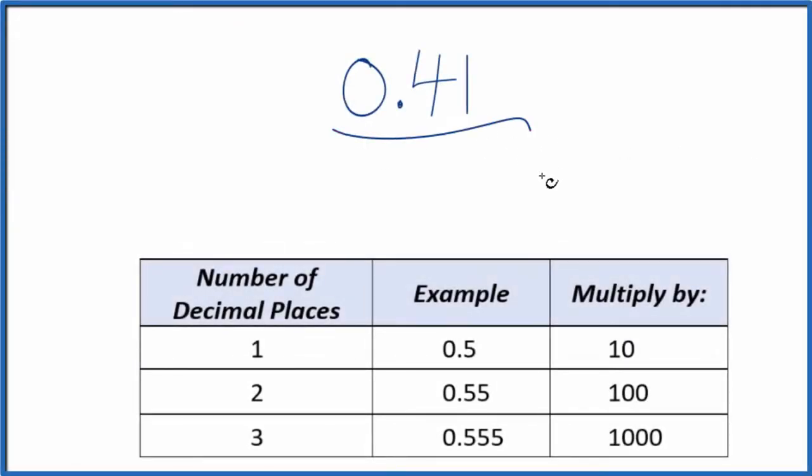Let's write the decimal 0.41 as a fraction. Here's how we do that. First off, let's call it 0.41 over 1. We're just dividing by 1 so we don't change the value, but now we have the start of a fraction.